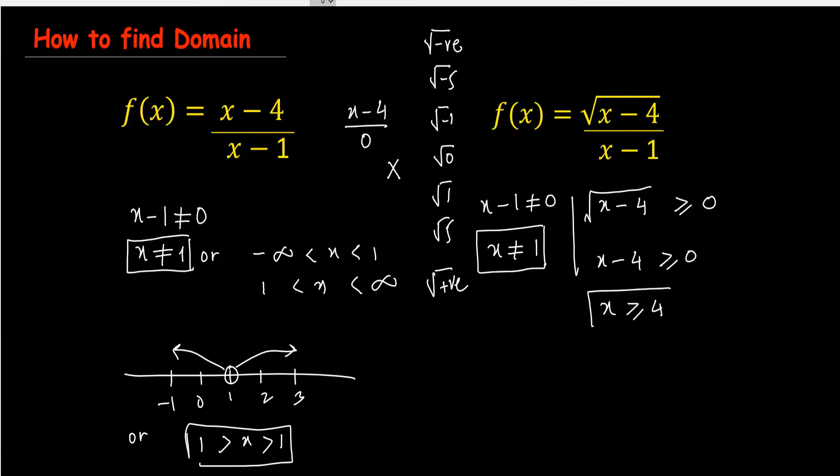So when we remove the square root, we have x minus 4 greater than or equals to 0, and x is greater than or equals to 4.